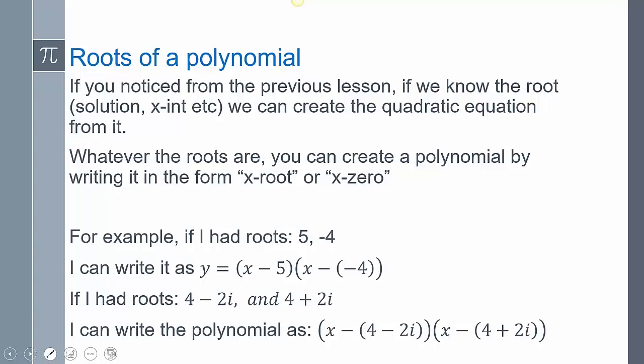We're going to take this idea of conjugates and set it off to the side. We're going to look at the roots of a polynomial in terms of complex numbers. If you remember from the previous lesson, we know that the root or the solution or the x-intercept, we can create a quadratic equation from it. So whatever the roots are, you can create a polynomial by writing the form like x minus your root or x minus your zero.